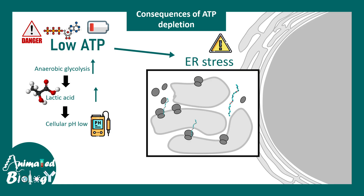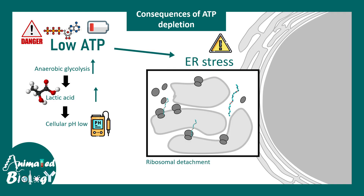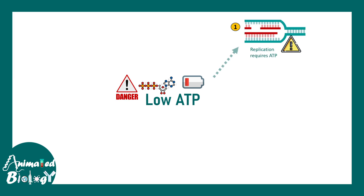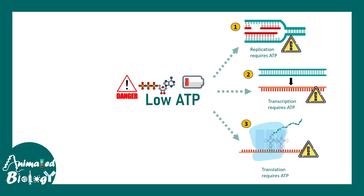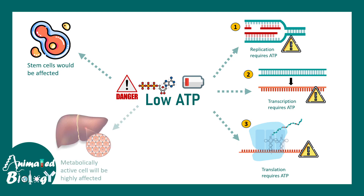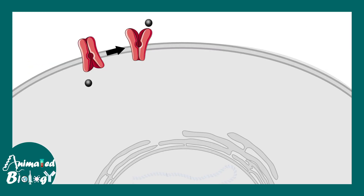ER stress leads to swelling of the endoplasmic reticulum and detachment of ribosomes attached on the ER surface, causing a dramatic decrease in protein production in the cell. Loss of or low ATP leads to replication, transcription, and translation problems. This severely affects actively dividing cells like stem cells or metabolically active cells like hepatocytes in the liver.